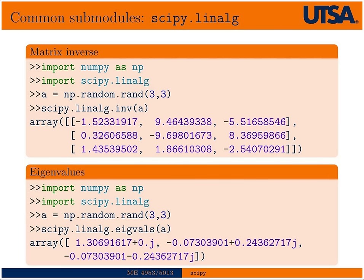Here are some examples from the linear algebra package. I'm importing NumPy, using it to create a random 3x3 matrix, and then solving for its inverse — and there's the output. Similarly for eigenvalues: import NumPy, create a random 3x3 matrix, solve for eigenvalues. In this case they turn out to be complex numbers.